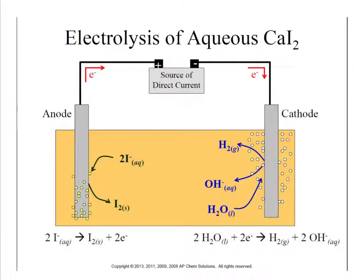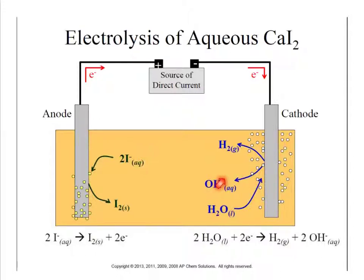Here's a model of what this looks like. At the anode, we take electrons away from the iodines, forming iodine solids that get plated onto the electrode. Electrons are pumped over to the cathode, where they attach to the water molecules, generating OH⁻ and H₂ gas. You'll see bubbles from the H₂ gas, and if we put in an indicator or pH probe, we'd see the solution's pH increasing as it becomes more basic.